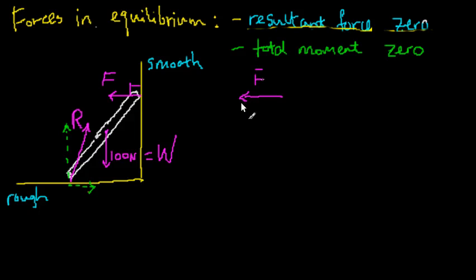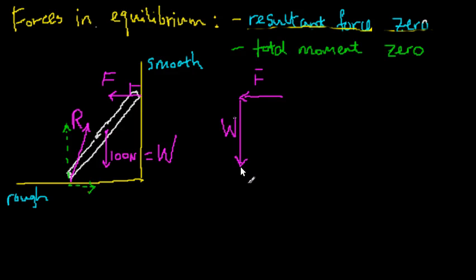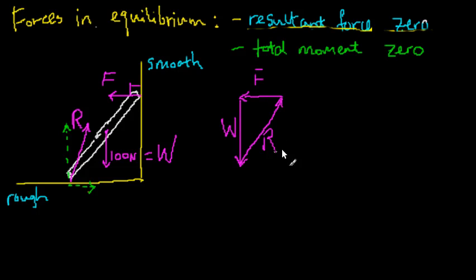I'm going to place the tail of W at the tip of F. So my W arrow goes here. Finally, the R arrow from the ground — I move it so its tail touches the remaining tip, and its tip has to touch the tail of F. The reason is that all three arrows must form a closed triangle in order for these three forces to be in equilibrium.